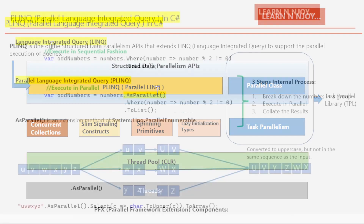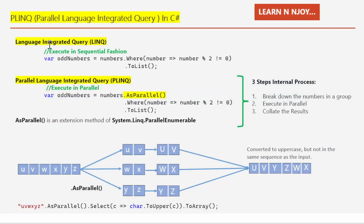Let's see an example of a LINQ query first, then a PLINQ example. LINQ executes queries in a sequential fashion. Here, `oddNumbers = numbers.Where(number => number % 2 != 0).ToList()` — this creates a new list containing only the odd numbers from the original collection. The lambda expression `number => number % 2 != 0` defines the filter condition, meaning include a number in the result only if the remainder when dividing by two is not equal to zero — in simpler terms, only odd numbers.